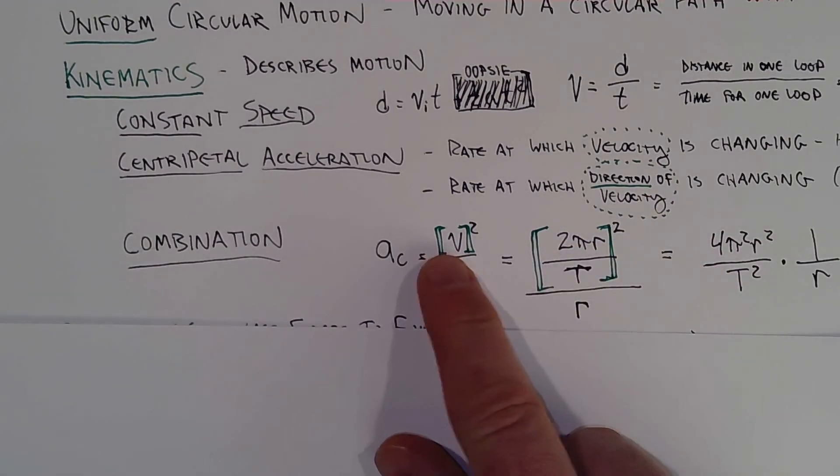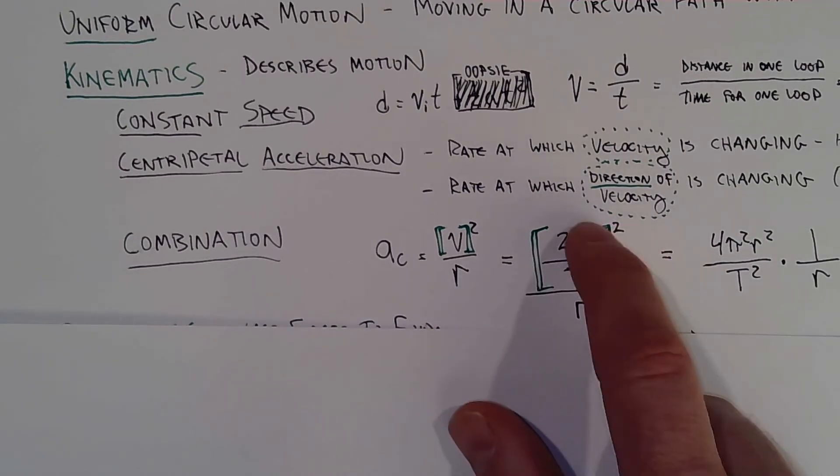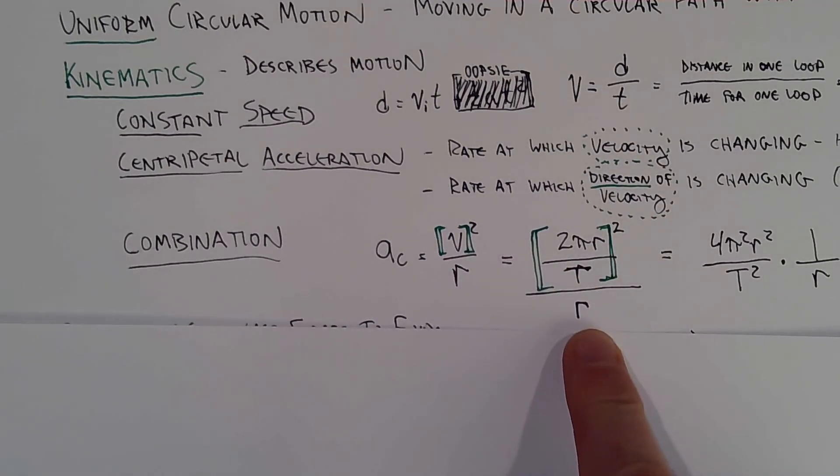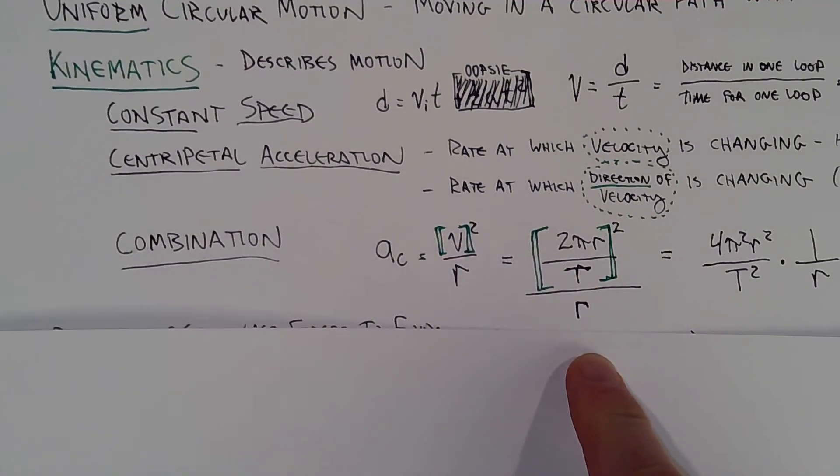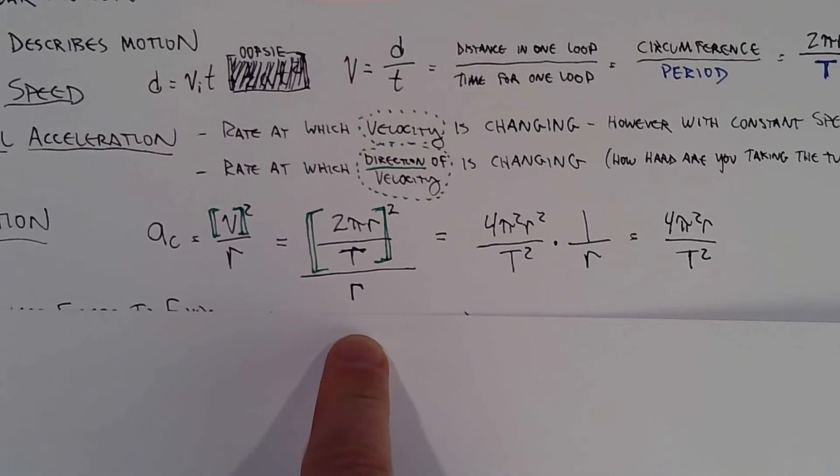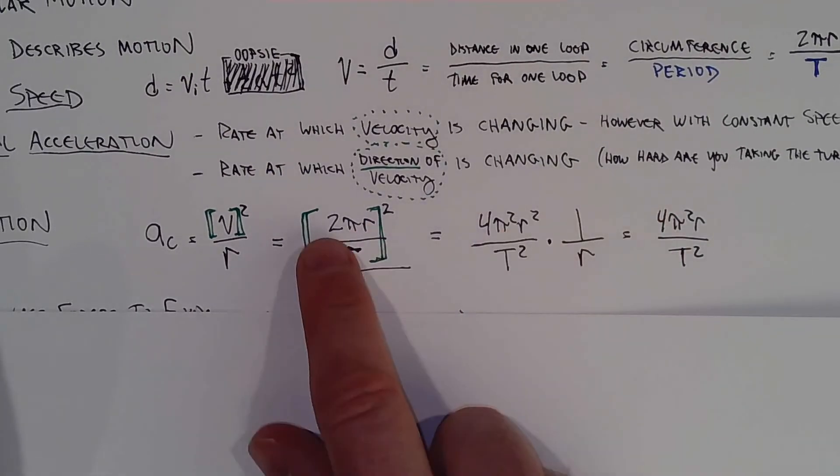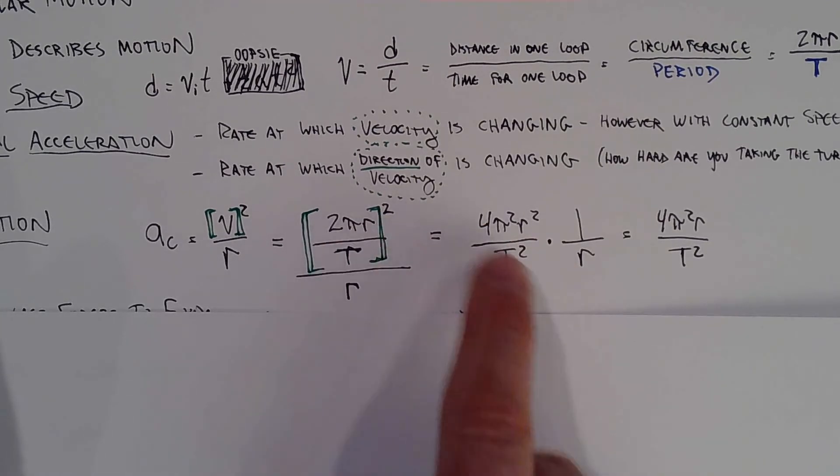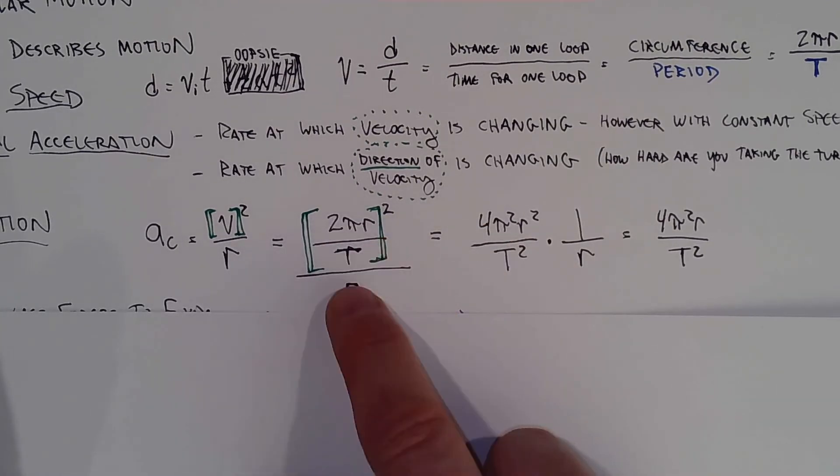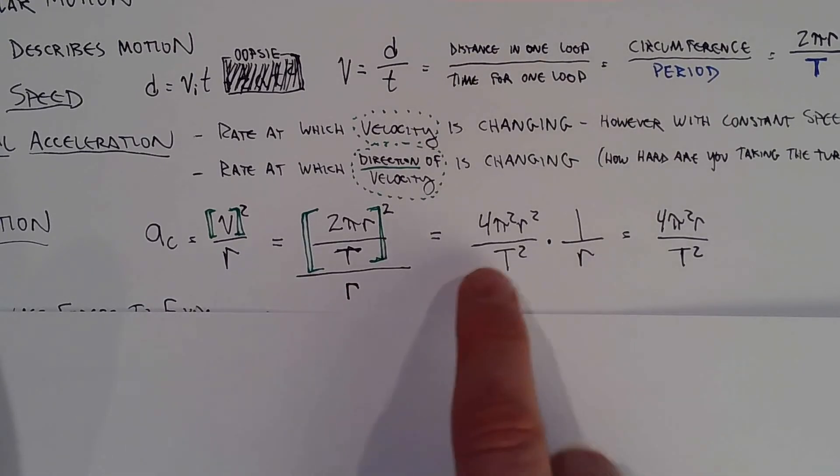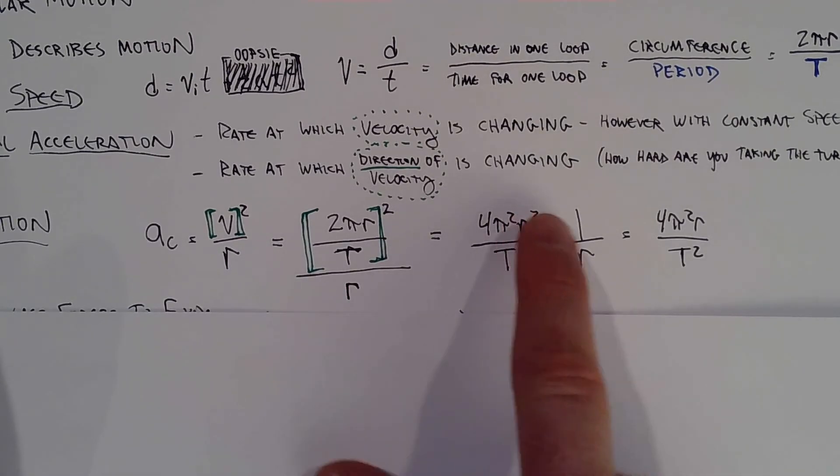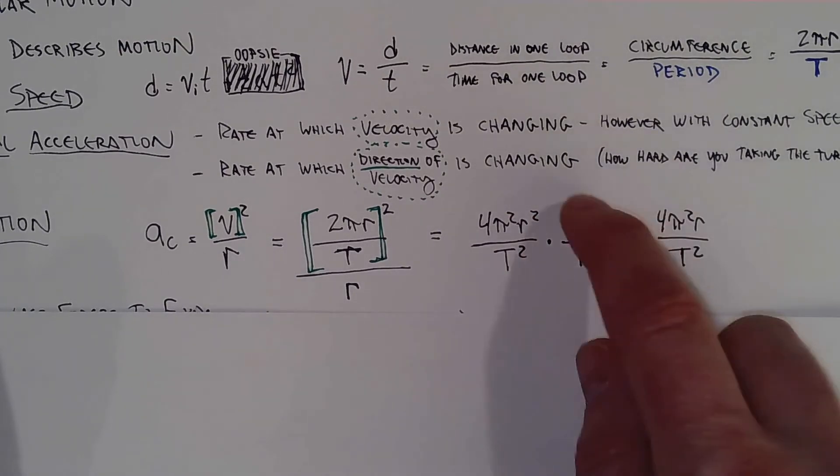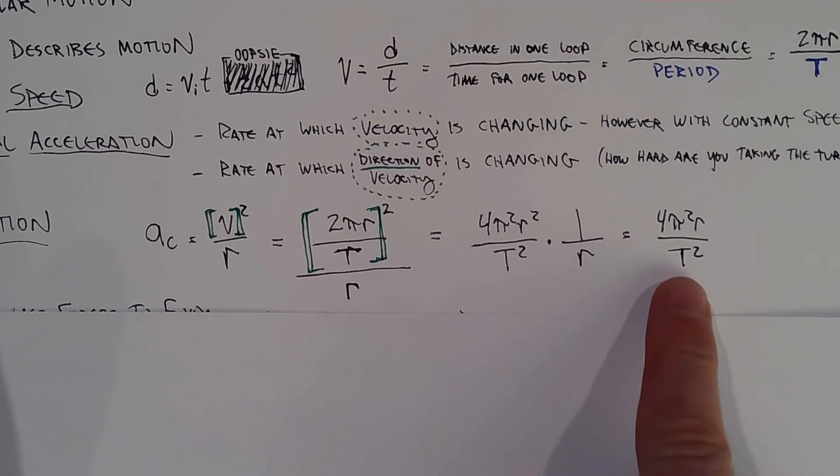Now that quantity v is squared. And that all goes over the radius. So if we factor through the square into the fraction, 2 becomes 4, π becomes π², r becomes r², and t becomes t². Dividing by a fraction is the same as multiplying by the reciprocal. So we can see that an r² divided by an r, one of those r's is going to cancel out. So this term goes away, we lose an r from the top, and we're left with this final value here.